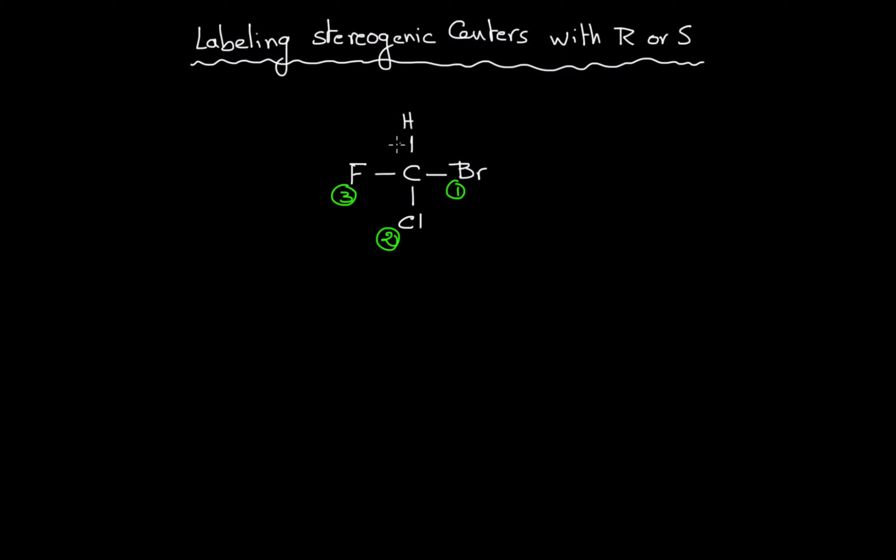And of course, hydrogen, since it has the lowest atomic number in the periodic table, will always get priority number four.